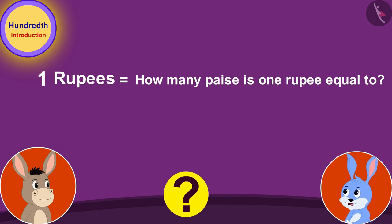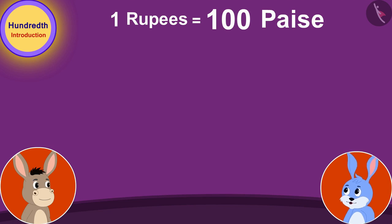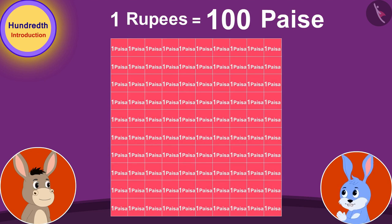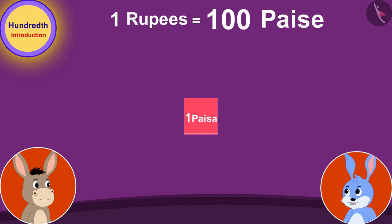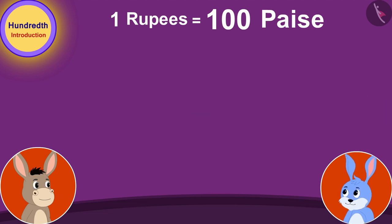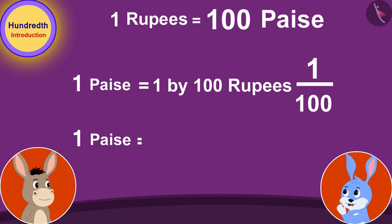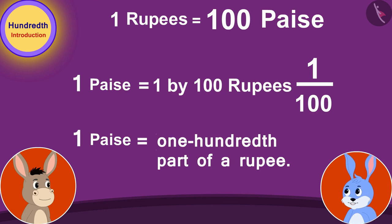Bunny laughed and said, Bhola, how many paise is one rupee equal to? 100 paise! Bhola replied quickly. Exactly. Suppose if we represent hundred paise by making a hundred squares, then one square would be equal to one paise. If we take one of these hundred squares, we can write it as a fraction: one by hundred. Therefore, one paise is one by hundred, or one hundredth part of a rupee.